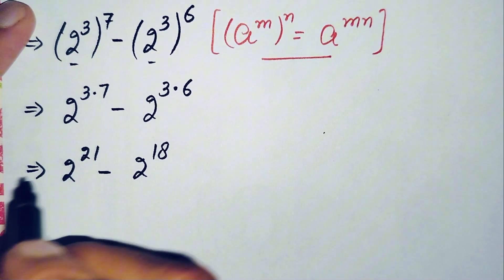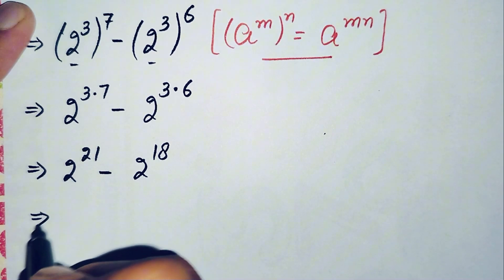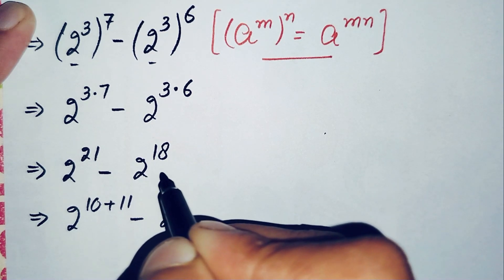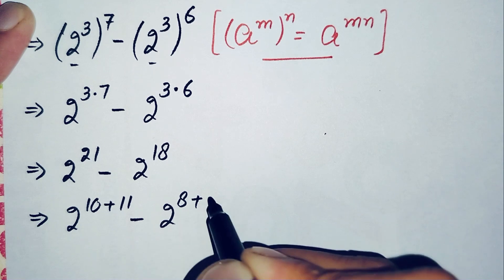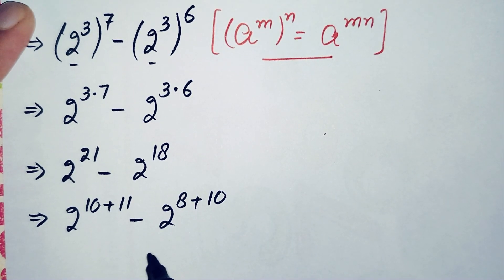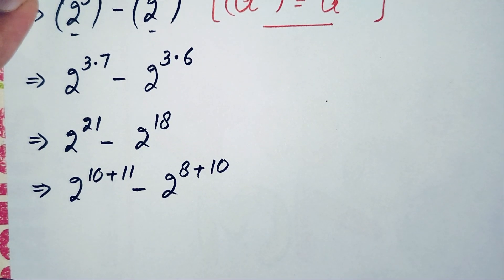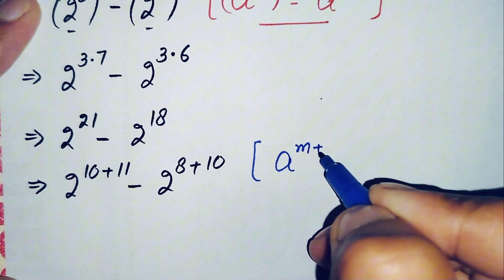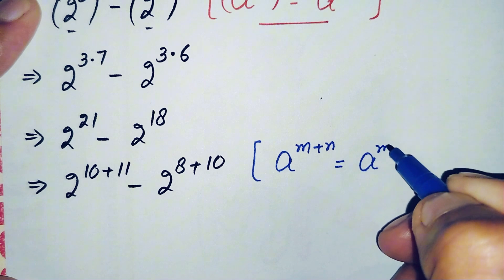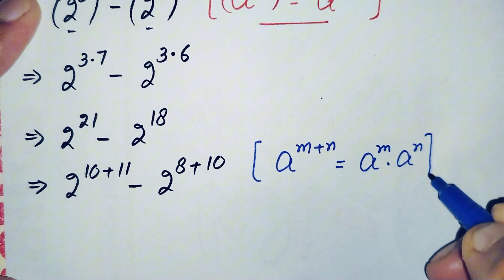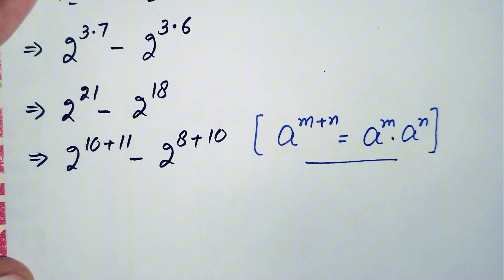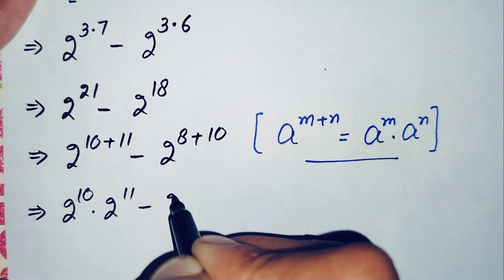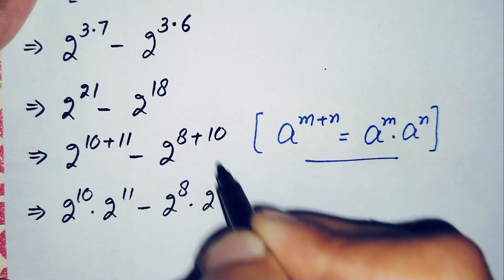Now we will change these two powers as sums of other numbers. We can write power 21 as the sum of 10 plus 11, minus 2 raised to power, and we can write 18 as the sum of 8 plus 10. Using the identity a raised to power m plus n equals a raised to power m times a raised to power n, this equation becomes 2 raised to power 10 times 2 raised to power 11, minus 2 raised to power 8 times 2 raised to power 10.